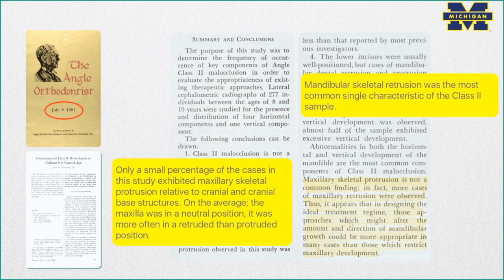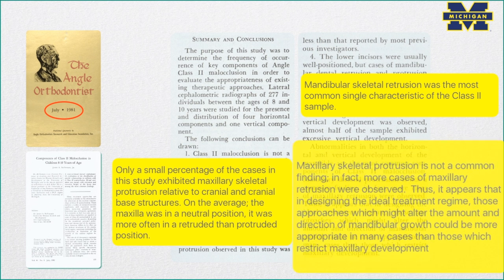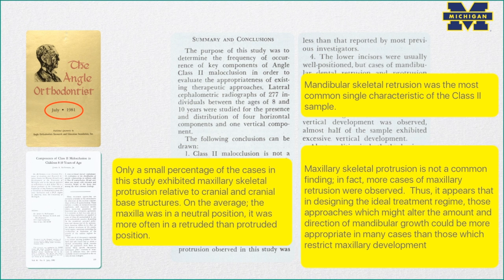McNamara further stated that mandibular skeletal retrusion was the most common single characteristic of the Class II sample. Obviously, it would make sense to try to develop the mandible forward rather than retract everything. Finally, he stated that maxillary skeletal protrusion is not a common finding — in fact, more cases of maxillary retrusion were observed. Thus, it appears that in designing the ideal treatment regime, those approaches which might alter the amount and direction of mandibular growth could be more appropriate in many cases than those which restrict maxillary development.